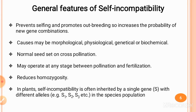Self-incompatibility is considered an important outbreeding mechanism for normal fruit setting. The general features include: first, it is an outbreeding mechanism which prevents autogamy and promotes allogamy, increasing the chances of new gene combinations due to cross-pollination. Second, self-incompatibility results from morphological, genetical, physiological, or biochemical causes — it is not under simple genetic control; differences in morphology, physiological reaction, or genetic constitution can all contribute.